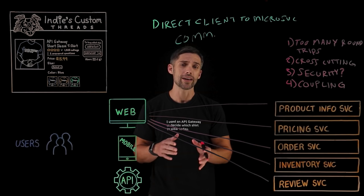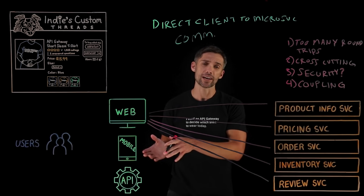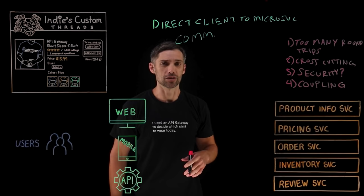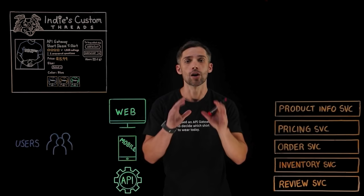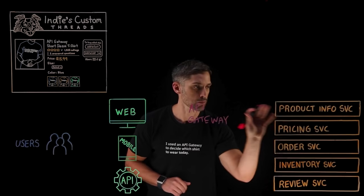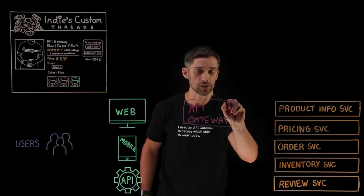Here's a quick overview of direct client-to-microservice communication architecture, and now let's look at what an API Gateway architecture might look like. Your API gateway would reside right in the middle between your clients and your microservices, and there are numerous benefits with implementing an API gateway solution.